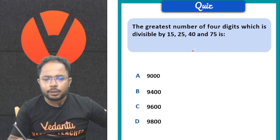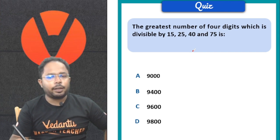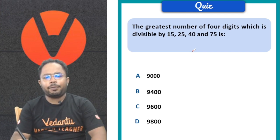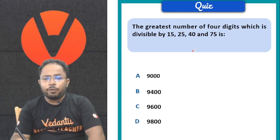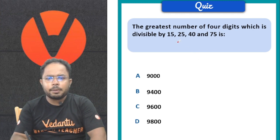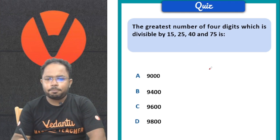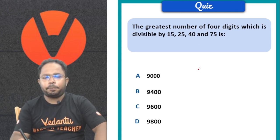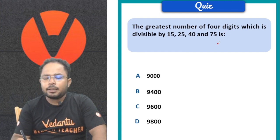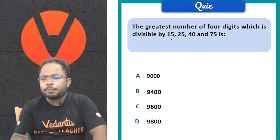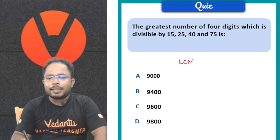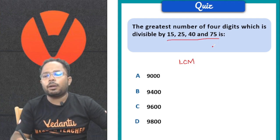Next question: The greatest number of 4 digits which is divisible by 15, 25, 40, and 75. We need the greatest 4-digit number divisible by these numbers. We know that 9999 is the greatest 4-digit number, but is it divisible by all these numbers? We don't know. So we will take out the LCM first - what is the lowest common multiple of these 4 numbers?